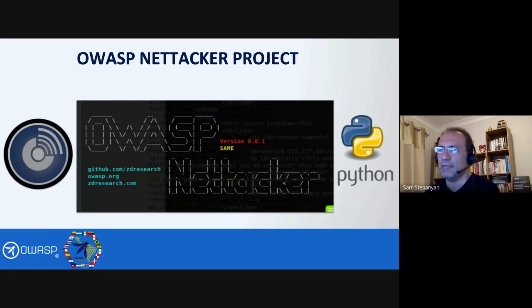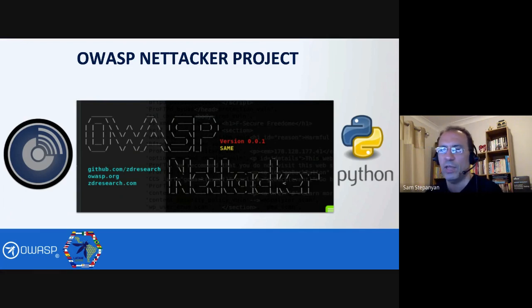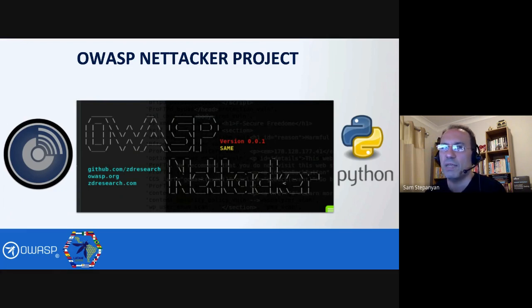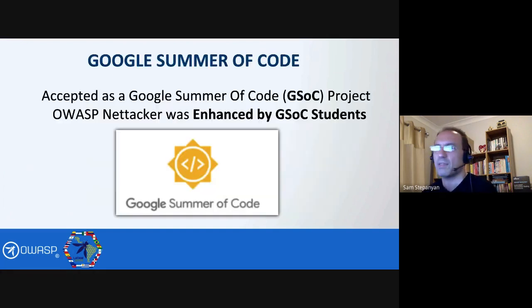OWASP Nettacker is a project written to assist with penetration testing, automating penetration testing tasks, and to help you with information gathering and reconnaissance. It is written in Python. The older version of OWASP Nettacker is compatible with both Python 2 and Python 3, which means older devices that do not support Python 3 can still run OWASP Nettacker — which is great.